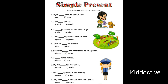I'm going to solve questions one to nine and you tell me the answer for number ten. Brian dashes peanuts and walnuts — Brian is a name, so Brian eats. Second: Julia feeds her cat. With 'I', we use the original form: I take photos of all the places I go. With 'they' also we use the original form: they grow vegetables in their farm.